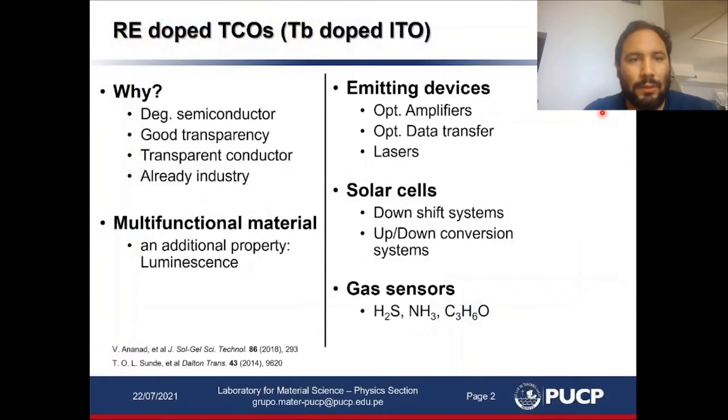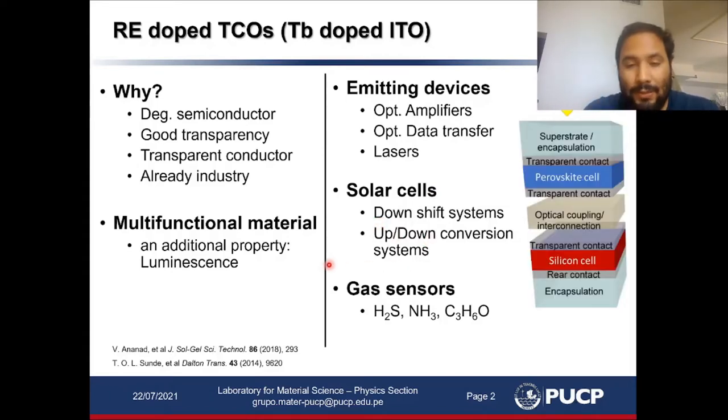Our interest in introducing rare earths in TCOs is to introduce a new additional property, luminescence, to an already multifunctional material without compromising their optical transparency and electrical conductivity. We believe that this might open a wide range of applications in light-emitting devices, in solar cells as downshift and up-down conversion layer systems, as well as gas sensors.